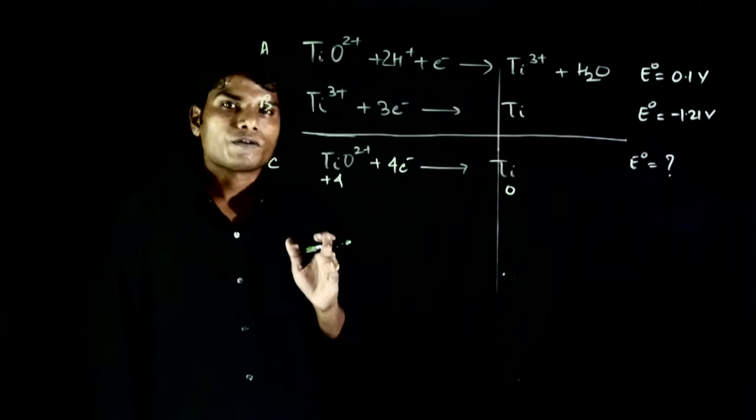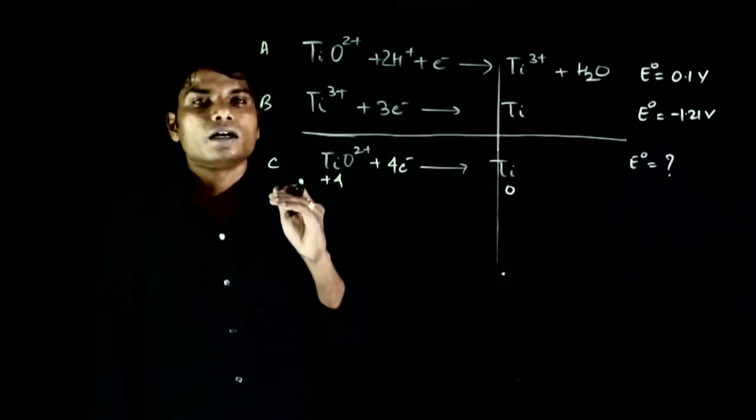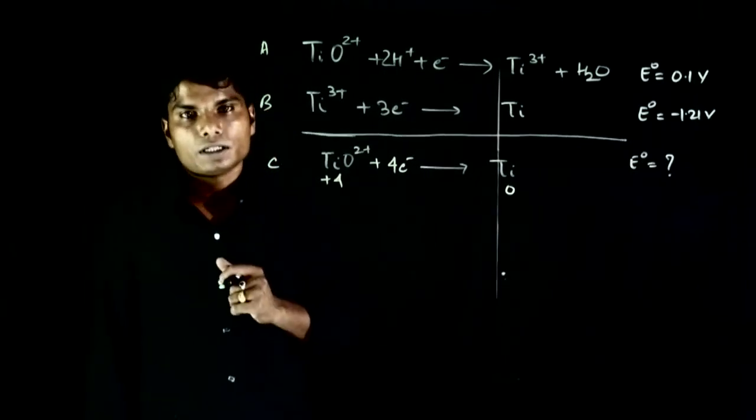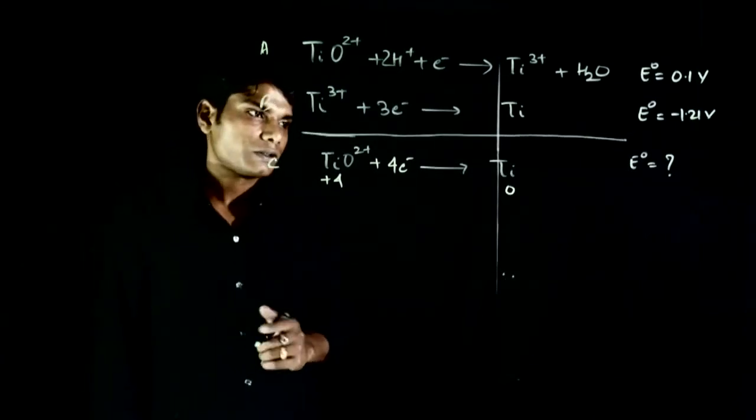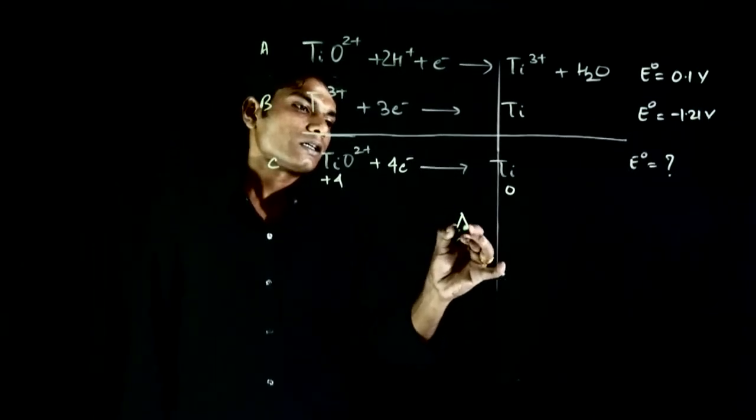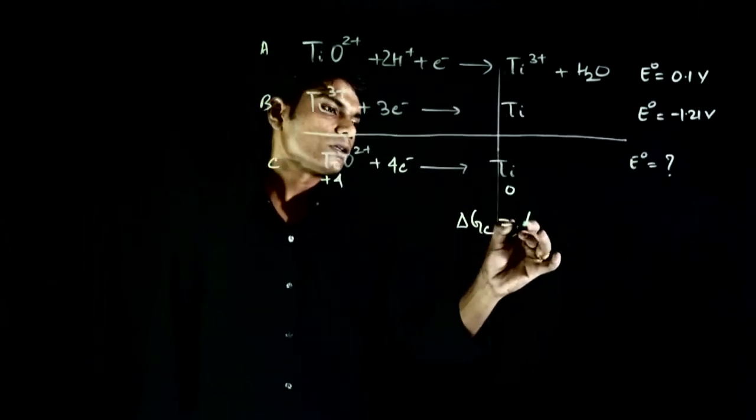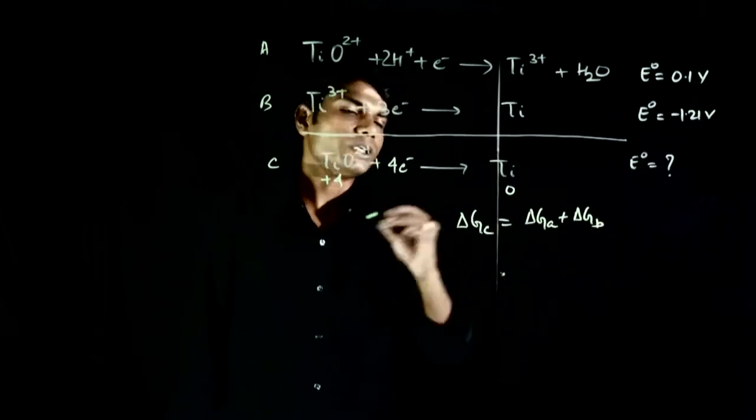Because, Ea simple addition doesn't happen like this. Ea, we have to do in terms of delta G. So, delta G we can simply add.